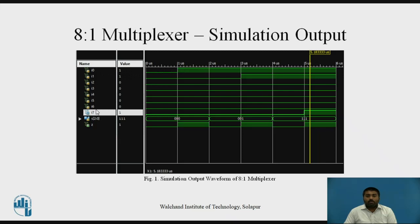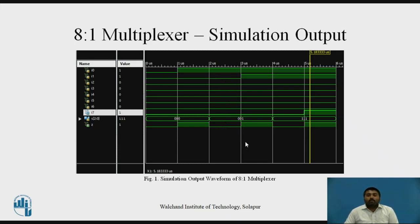These are the inputs i0, i1, i2 through i7. The select line S is 3 bits, shown as a bus, with individual bit lines. When the select line value is 000, the i0 input is selected — i0 is 0, so output is 0. When i0 becomes 1 with select still 000, output becomes 1. When select line becomes 001, i1 input is connected, so output becomes 0 again. This is how you verify the simulation for the 8-to-1 multiplexer.